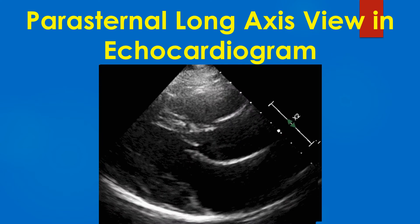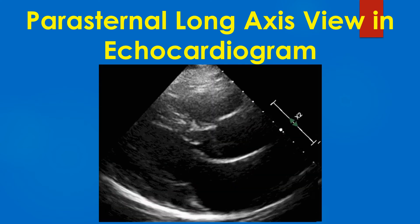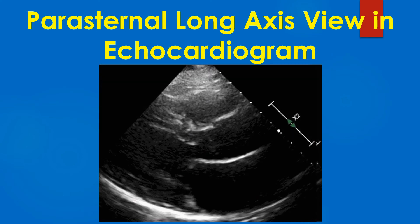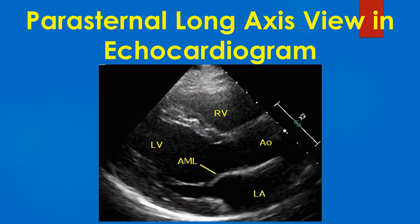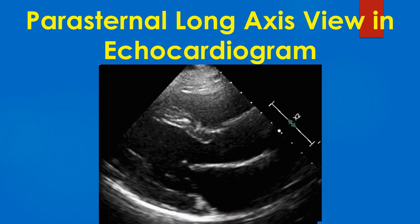RV – Right ventricle, LV – Left ventricle, LA – Left atrium, AO – Aorta.